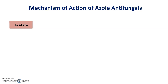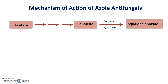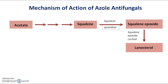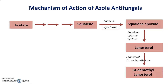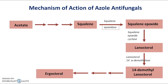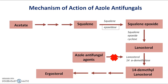The cell membrane is rich in ergosterol. Ergosterol proceeds via the acetate-mevalonate pathway. Acetate is converted to squalene, which is further converted to squalene epoxide by the enzyme squalene epoxidase. Squalene epoxide is further converted to lanosterol by squalene epoxide cyclase. Lanosterol is further converted to 14-alpha-demethyl lanosterol by the enzyme lanosterol-14-alpha-demethylase, and then further converted to ergosterol.